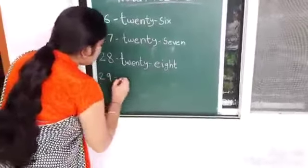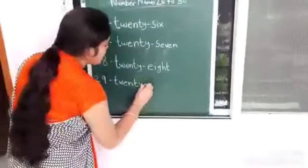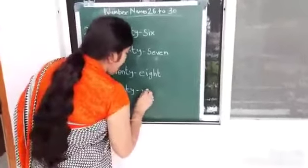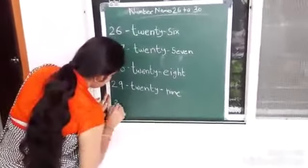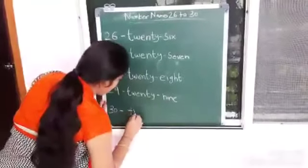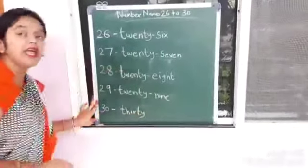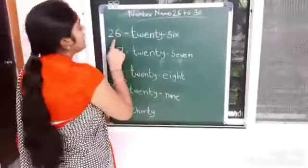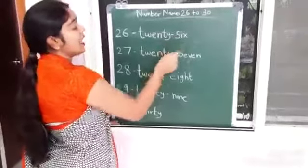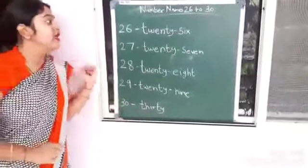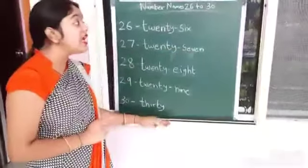29. T-W-E-N-T-Y. So kids, repeat with me. 26, T-W-E-N-T-Y S-I-X. 6, 26. T-W-E-N-T-Y, 27. 28. 29. 30.